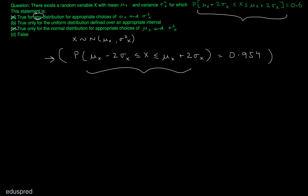Now we are left with option B and option D. Option B is saying that this statement is true only for the uniform distribution defined over an appropriate interval. Option D is saying that this statement is false. I'm going to address option D first — whether it is correct or not — and if not, we'll see how option B could be the right answer.